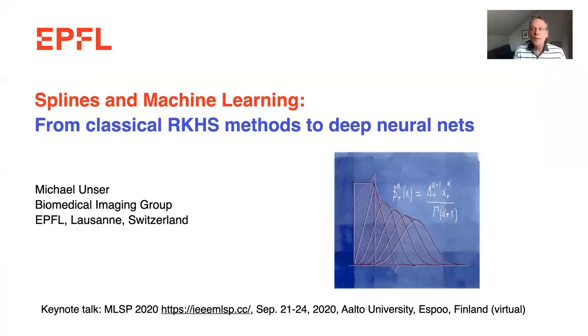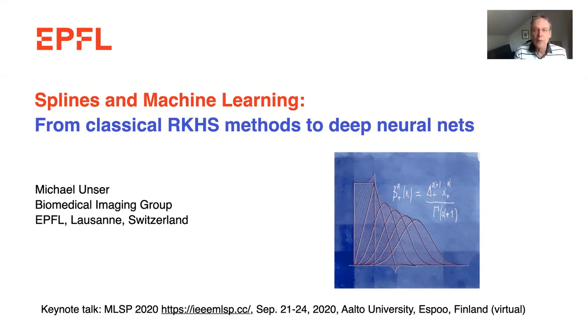Hello, my name is Michael Unser. I'm a professor at EPFL in Lausanne, Switzerland. First, I'd like to thank the organizers for the invitation. I'm very sorry we couldn't go to Finland this time, hoping for another opportunity. Let me start by sharing the slides. For those who know me, I've been using splines quite a lot during my career for signal processing, and now the more recent tendency is machine learning and deep neural networks. In this talk, I want to show you that splines are very relevant for both classical methods in machine learning as well as deep neural networks.